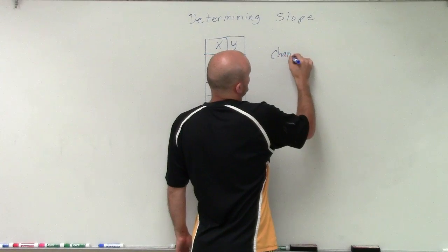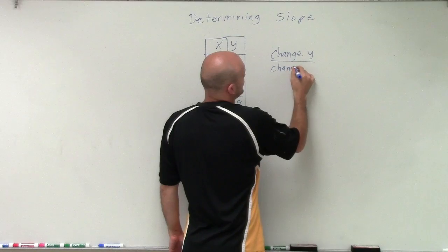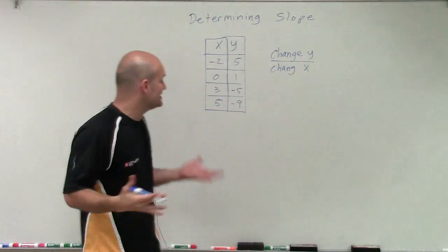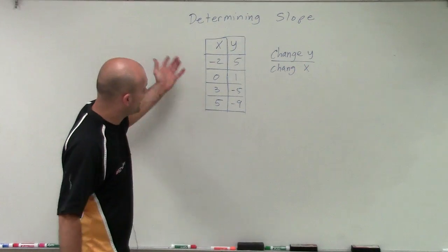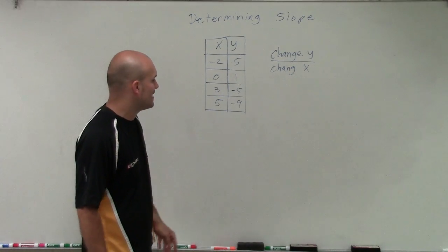So what I'm going to do is find the change in my y-coordinates over the change in my x-coordinates. We can pick any two values we want to. In this case, I'm going to pick 3 and 5, and negative 5 and negative 9.